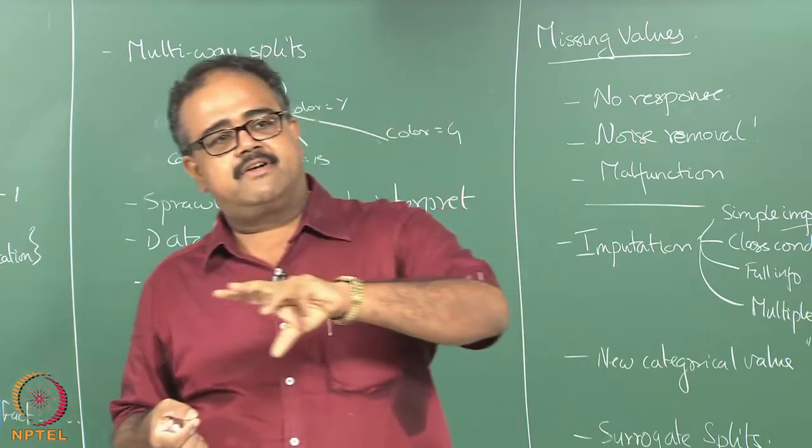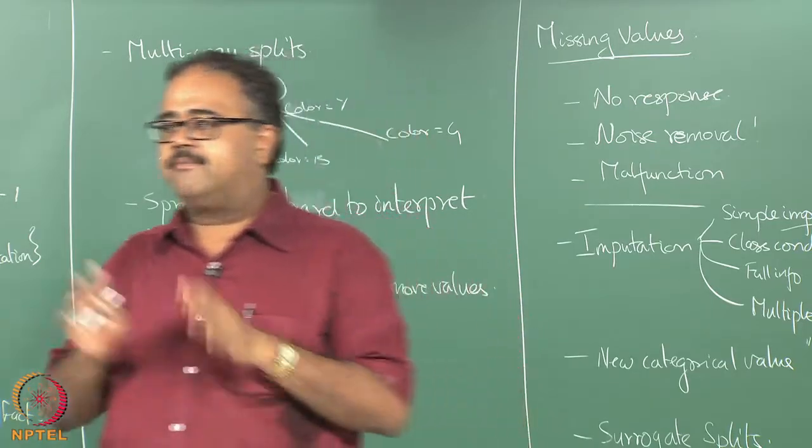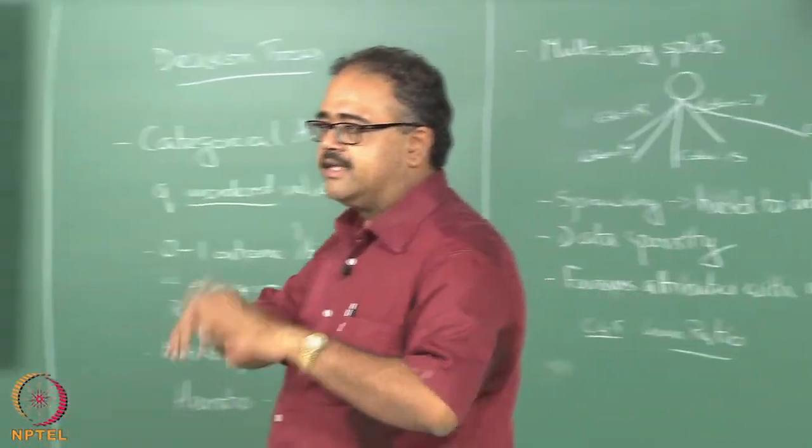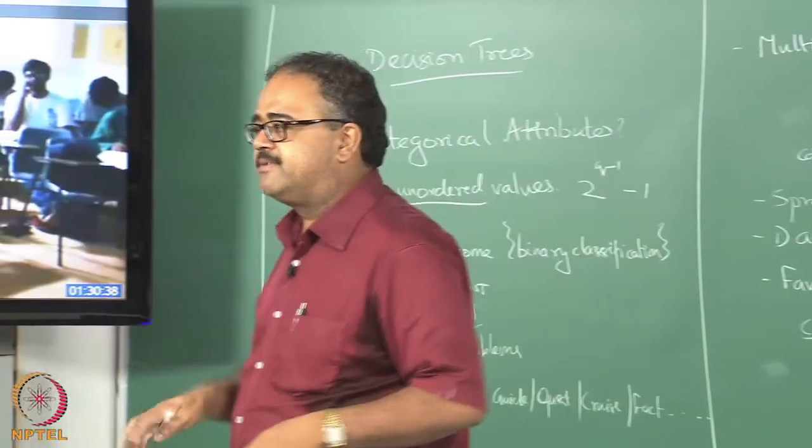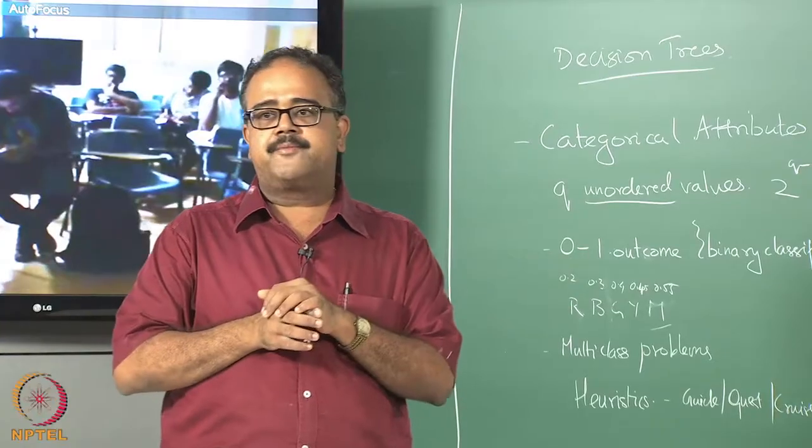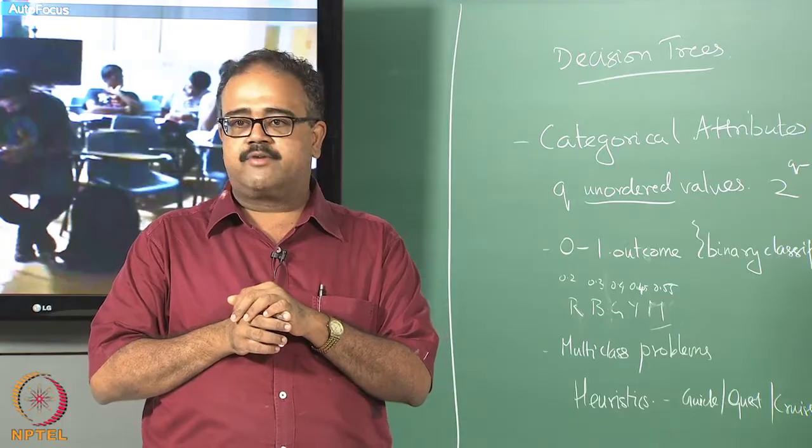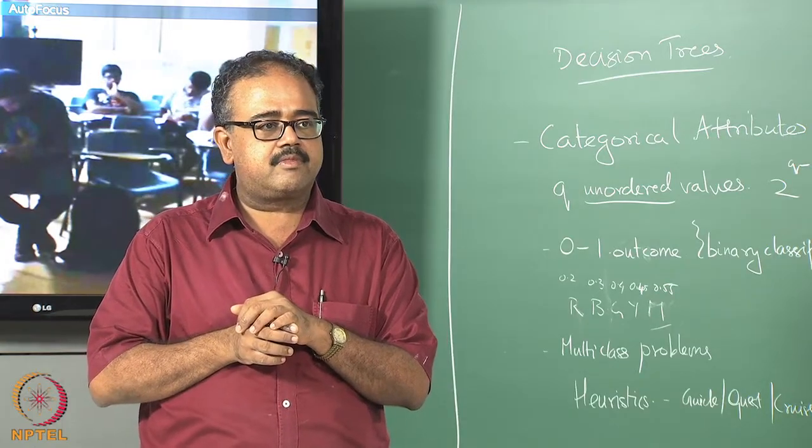What you do is, instead of training it on the data that is given to you, you train on slightly different versions of the data. Maybe you can just take 70% of the data, randomly choose 70% of the data and train a tree, randomly choose another 70% and train another tree, keep doing this and then somehow combine the class labels predicted by all the copies of the trees that you have trained.